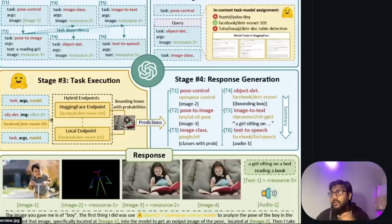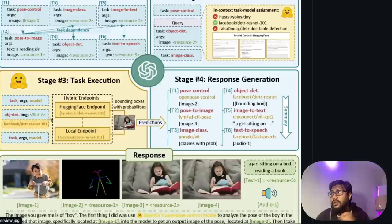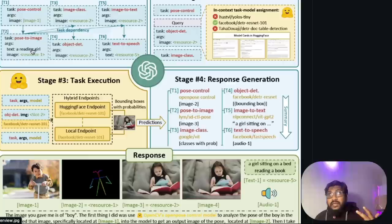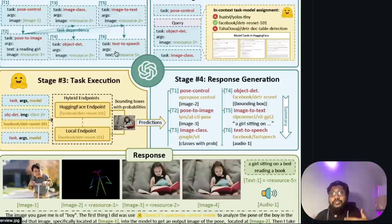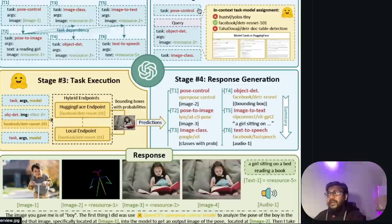When you give this as an input prompt or text to this AI system Jarvis, it's going to plan the task. Task one, task two, task three, task four, task five, task six. The first task is you need to get pose control. The second task is pose to image. The third task is image classification. Fourth task is object detection. Fifth task is image to text. And then the final task is to describe the image in its own words, our voice, is text to speech.